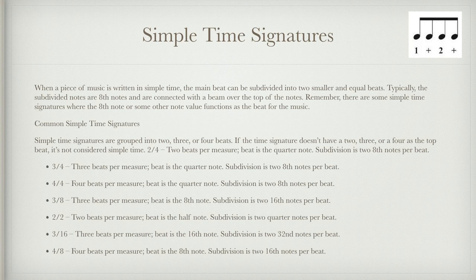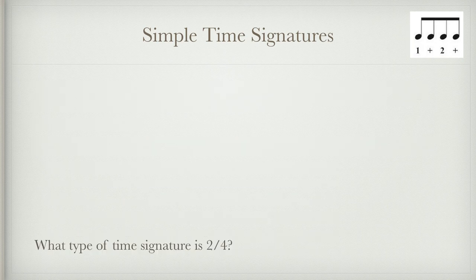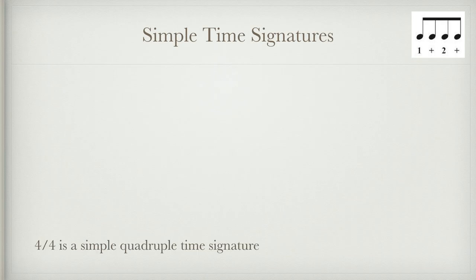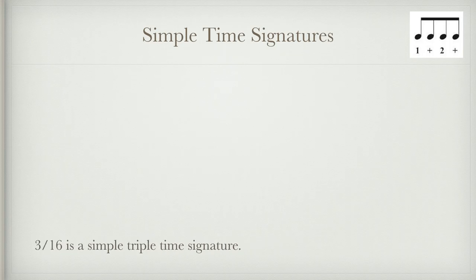Let's do a quick test. In a simple time signature, 2/4 is a simple duple time signature. You identify it by saying it's simple and then providing the beat classification. So 4/4 would be simple quadruple, and 3/16 is also a simple triple time signature.